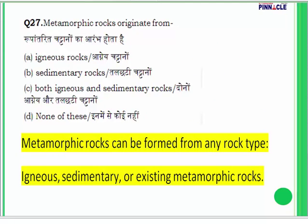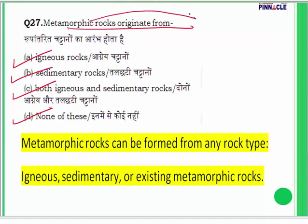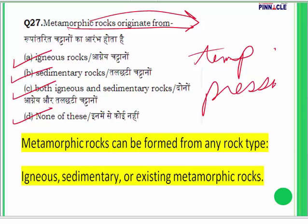Question 27: Metamorphic rocks originate from — igneous rocks, sedimentary rocks, both igneous and sedimentary, or none of these? Metamorphic rocks are those which have undergone a change due to temperature or pressure. Due to either of these two reasons, these rocks have undergone a change and are known as metamorphic rocks.